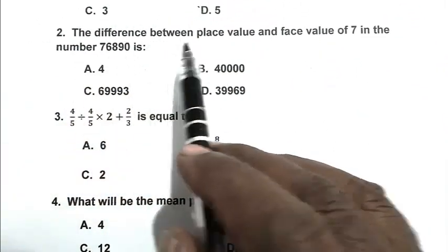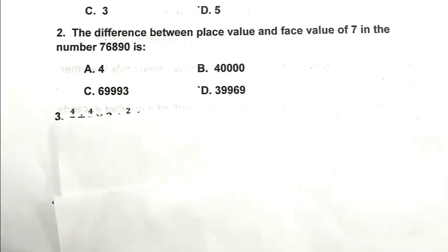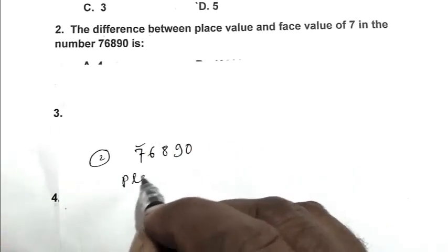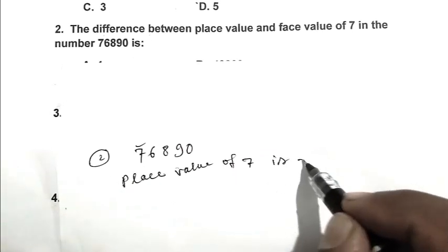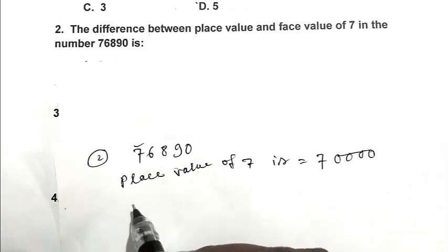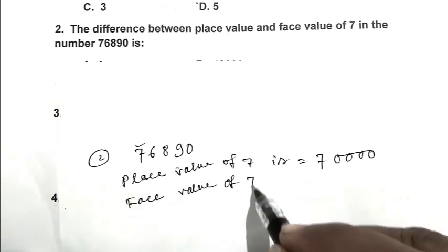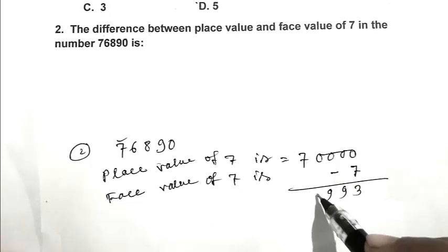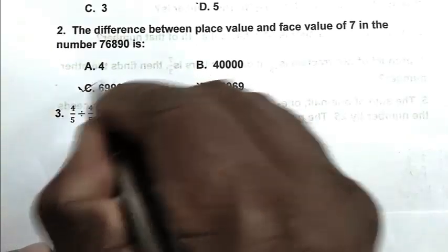Question number 2: The difference between place value and face value of 7 in the number 76,890. The place value of 7 is 70,000, and the face value of 7 is 7. So getting the difference, we get 69,993. So C is the right answer.